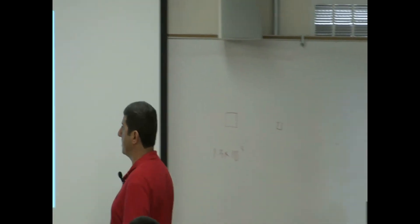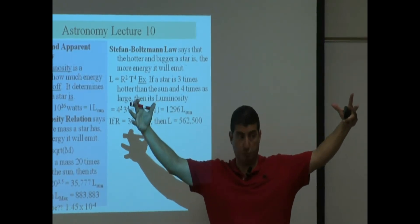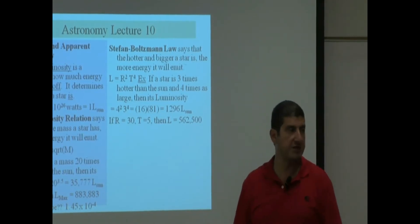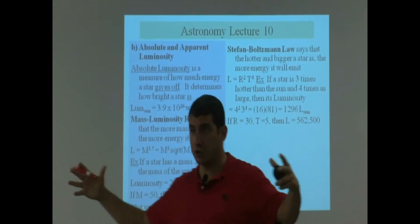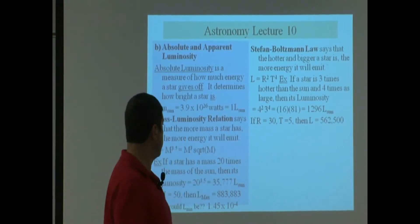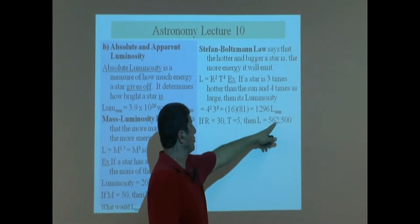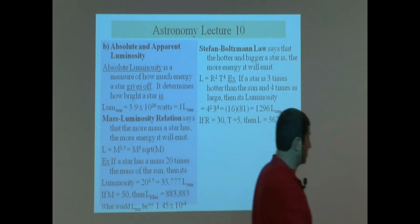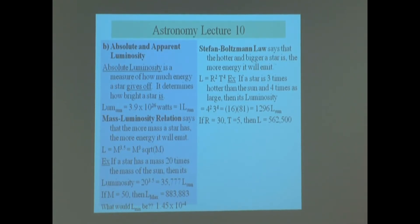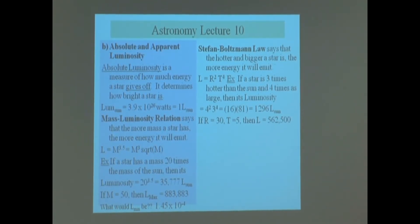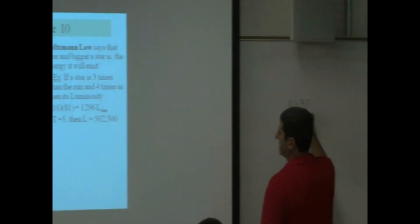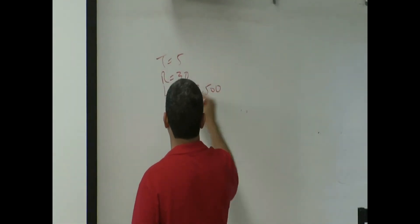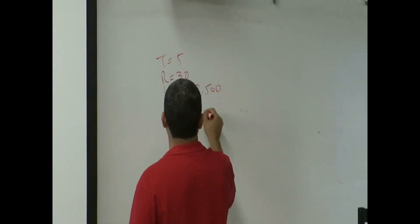How about if the radius of the star is 30 times bigger than the sun — much bigger — and the temperature is 5 times hotter? This one is not only bigger but also hotter. If you use this equation, R is 30 and T is 5, you're going to get 562,500 times as luminous as the sun.